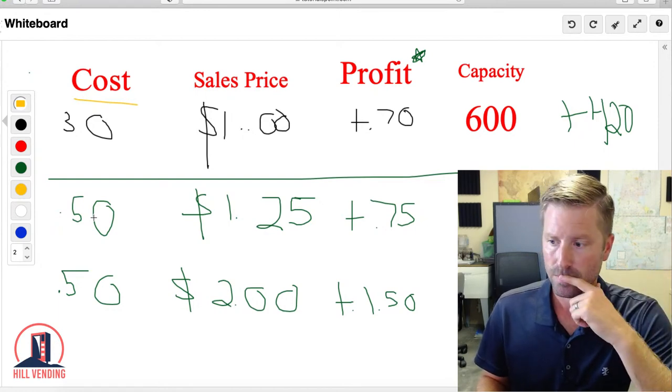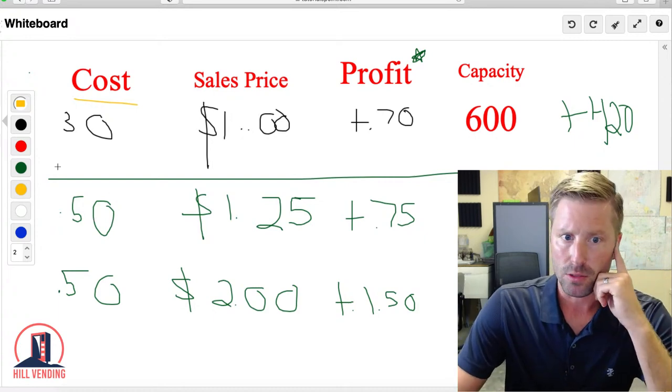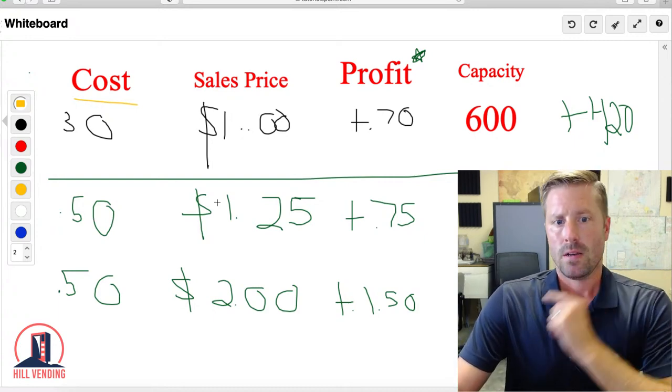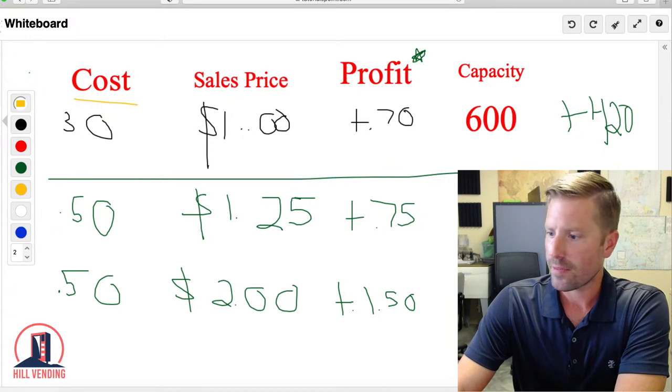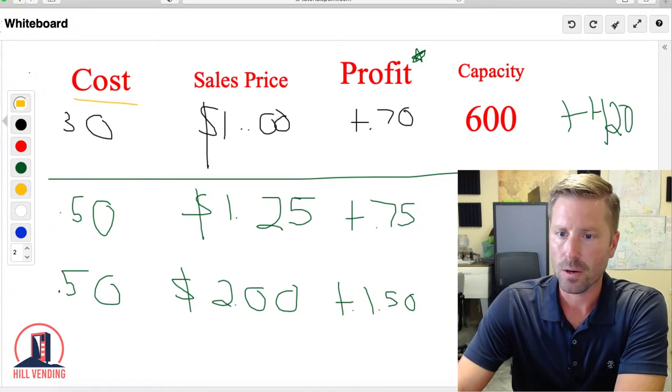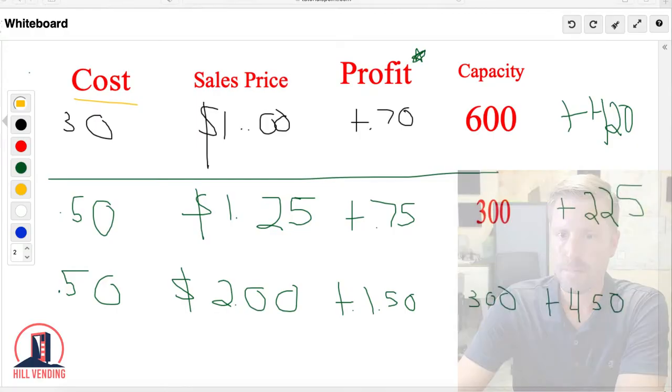I see you Adam's in the building, welcome welcome. I'll get to your question here in just a minute. 600 cans, let's say the machine holds 600 cans, $420 in profit that you're going to clear.